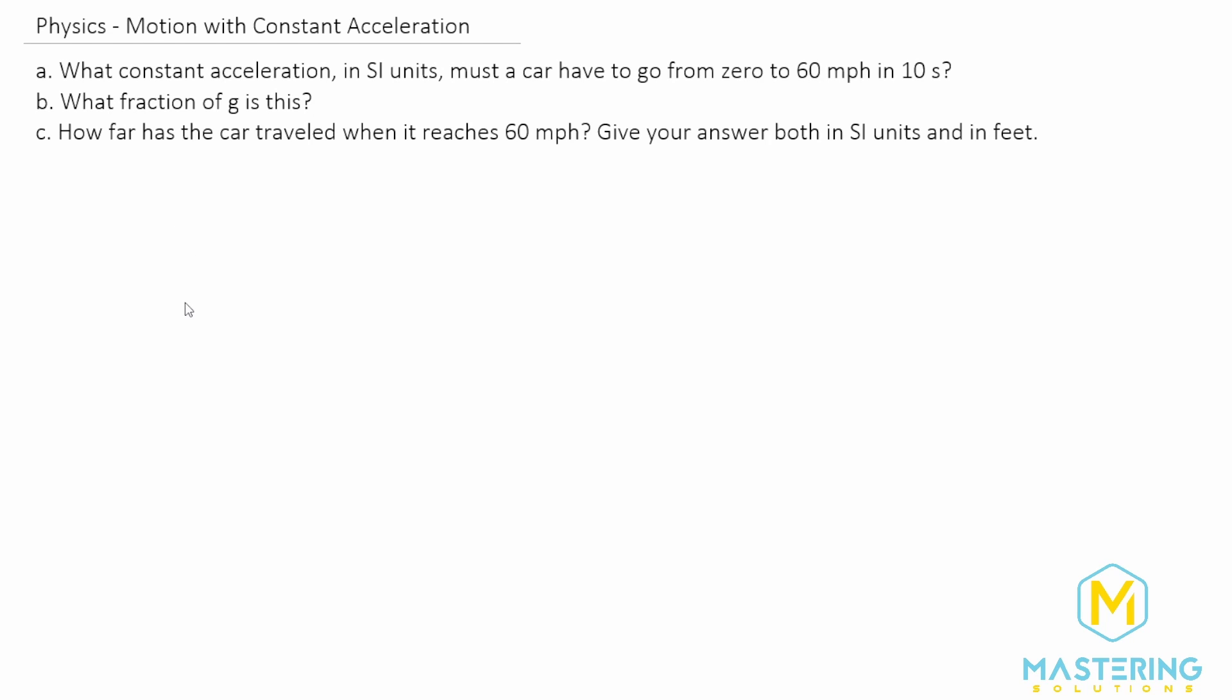Welcome to Mastering Solutions. In this problem we're going over motion with constant acceleration. They say what constant acceleration in SI units must a car have to go from 0 to 60 in 10 seconds, what fraction of g is this, and how far is it traveled in that time.